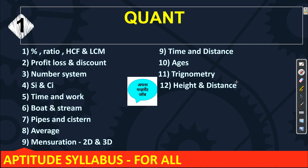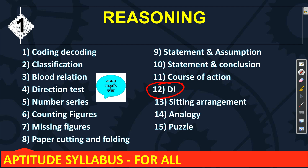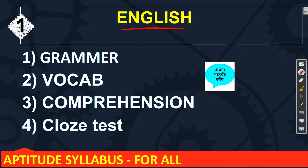Now for the non-technical/aptitude syllabus: there are 12 topics total in quantitative aptitude, including percentage, ratio, profit and loss, discount, number system, and others. The second subject is reasoning. The third subject is English — covering grammar, vocabulary, comprehension, and cloze test. These are compulsory topics you need to prepare. For vocabulary, daily PDFs are shared on the Telegram channel.